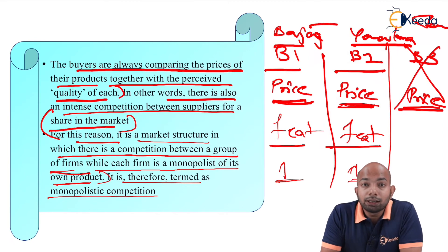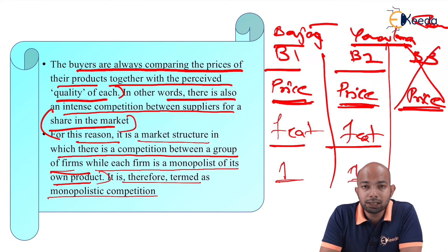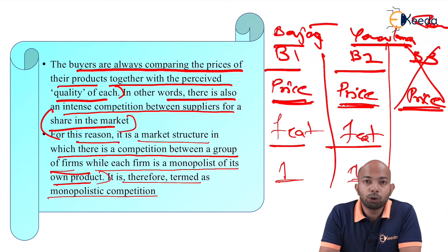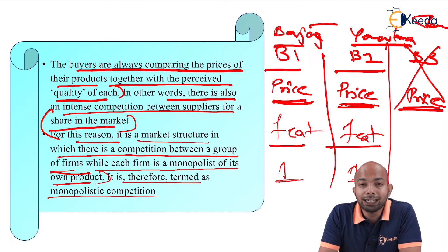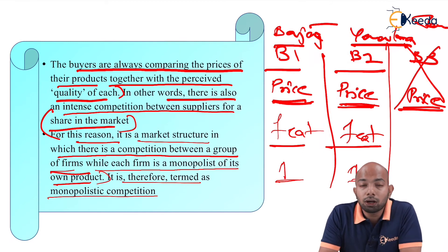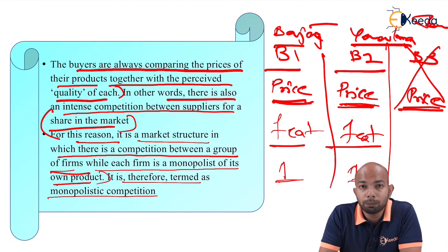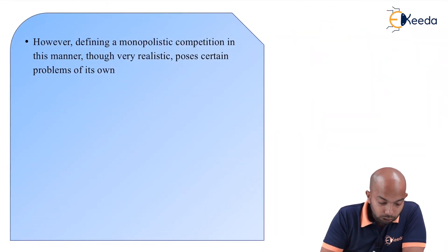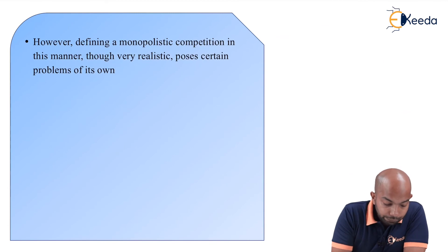It is therefore termed as monopolistic competition. Monopolistic has a lot of competition, but not as much as perfect competition. In perfect competition, bringing out advancements is pointless because price remains constant and is stagnant. In monopolistic competition, you still have some influence on price, which does not exist in perfect competition.